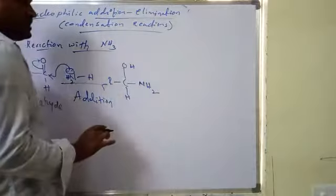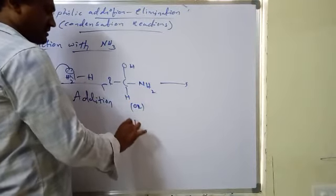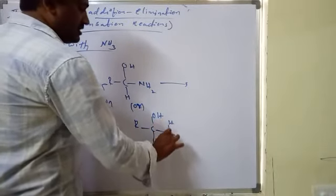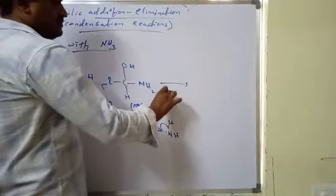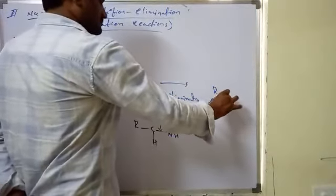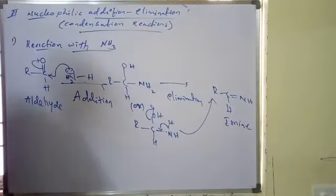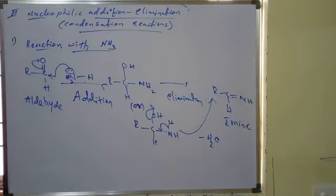Next, in the elimination step: from the intermediate containing R-C(OH)-NH2, water elimination takes place. When we shift here, water is eliminated. As a result, a C=N double bond is formed, which is called an imine. So these reactions involve Addition first, followed by Elimination, and are also called Condensation reactions.